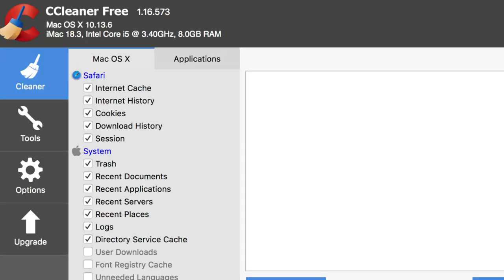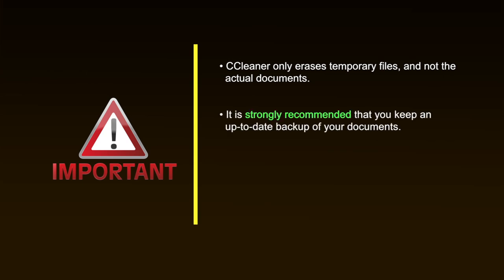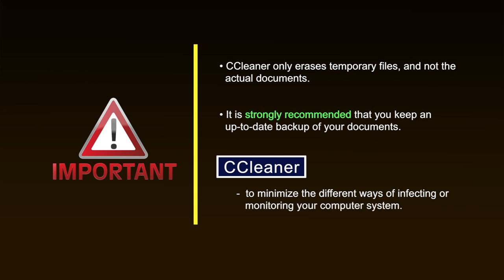To remove temporary data created every time you use a program, you would have to open each individual program directory, identify and then manually delete its temporary program files. CCleaner simply displays a list of programs and lets you choose the program or programs from which all temporary files should be deleted. Although CCleaner only erases temporary files and not the actual documents saved on your computer, it is strongly recommended that you keep an up-to-date backup of your documents. After running CCleaner, you may lose all browser and recent document histories and saved passwords. However, this is precisely the point of this tool — to minimize the different ways of infecting or monitoring your computer system.